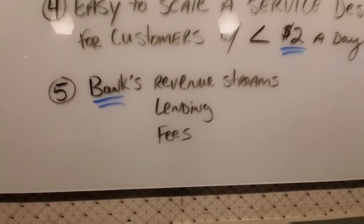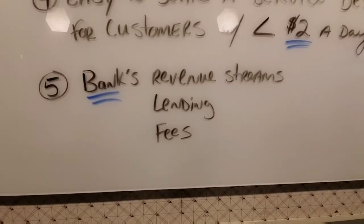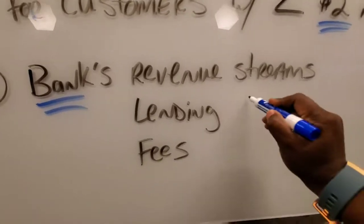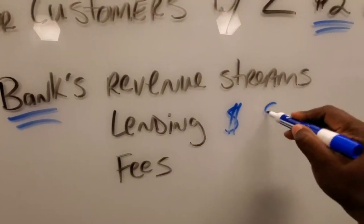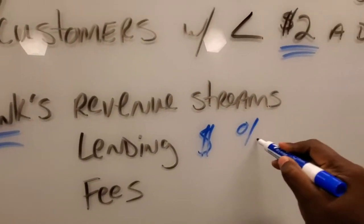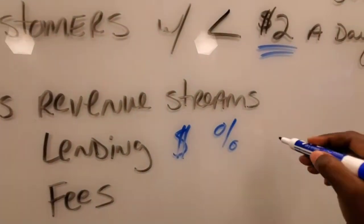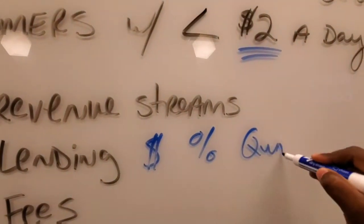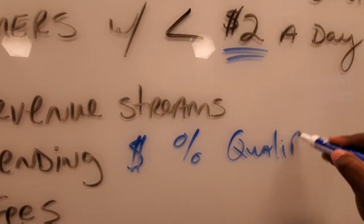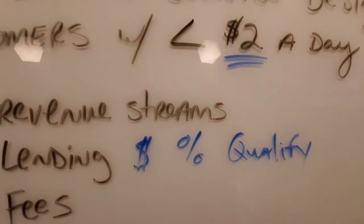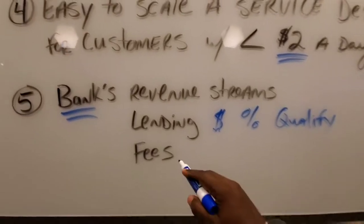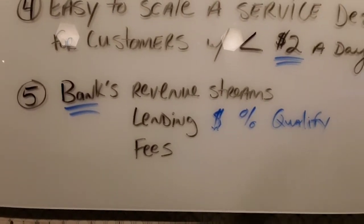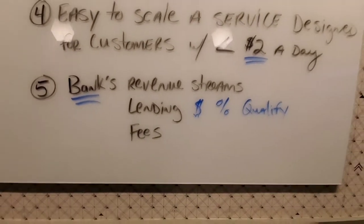Banks right now rely on revenue streams — they make a lot of money off of lending. They determine your percentage rates and whether or not you qualify. Facebook says they can actually disrupt that. Banks also make a lot of money off of fees.